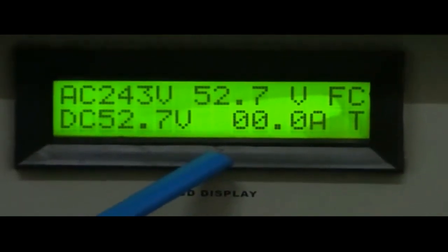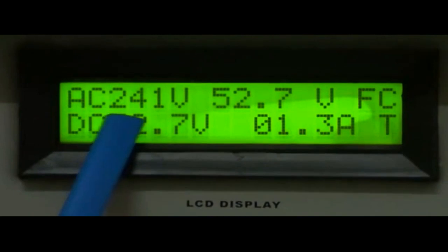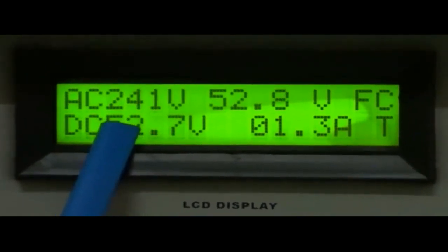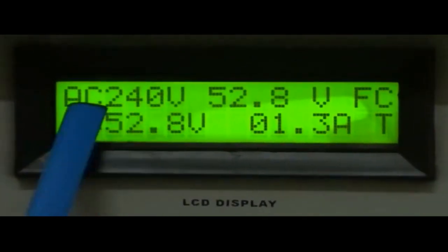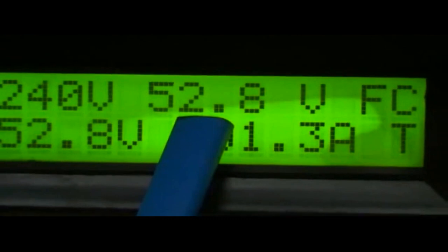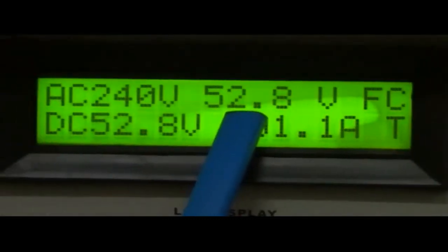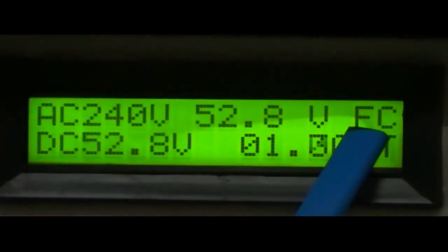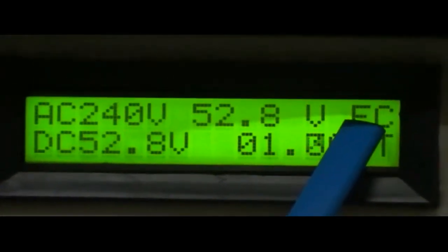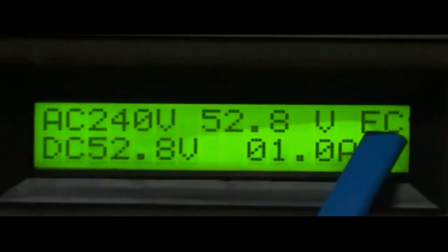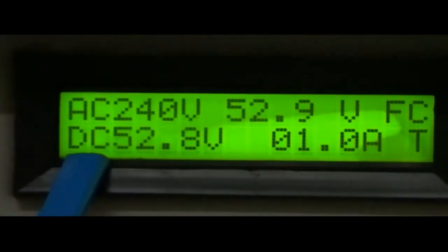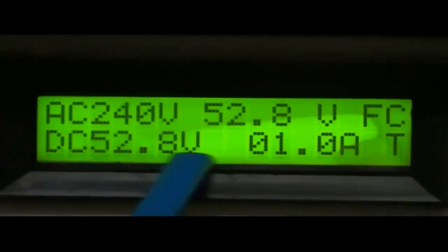The display shows: left corner of the display at first line shows the phase to neutral voltage connected to system, middle of the display at first line shows DC load voltage, right corner of the display at first line shows FC in float mode and BC in boost mode. Left corner of the display at second line shows battery voltage.